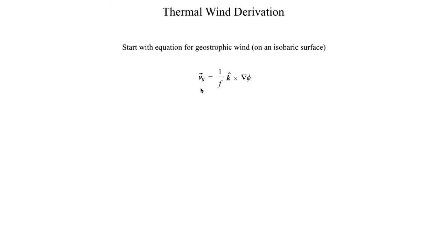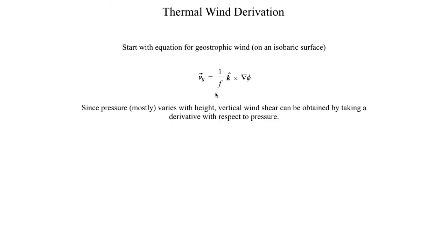Now something that we can do is take the derivative of both the left-hand side and the right-hand side with respect to pressure, because we're interested in vertical wind shear. Since pressure also varies in the vertical direction — somewhat in the horizontal direction but not nearly as much — that's something we can actually do since pressure mostly varies with height. By doing this, we take the derivative of the left-hand side with respect to pressure, which gives us a term representing vertical wind shear, and then we'll do some mathematical trickery on the right-hand side to get something physically meaningful that relates back to the previous segment.